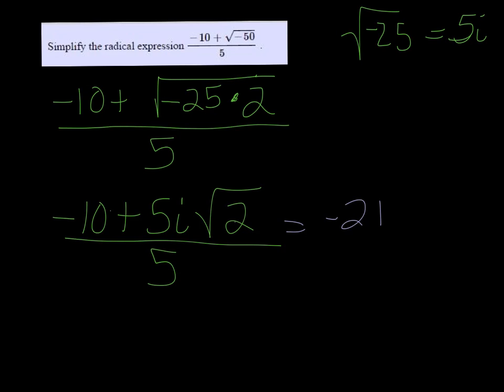So we get negative 2 plus just i now, root 2. And then it's over 1, so we don't need to write that anymore.